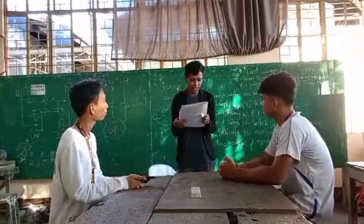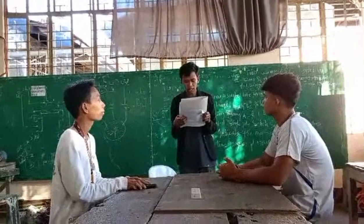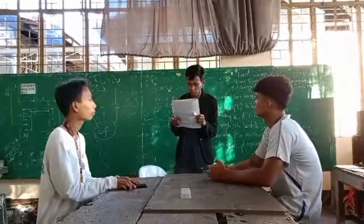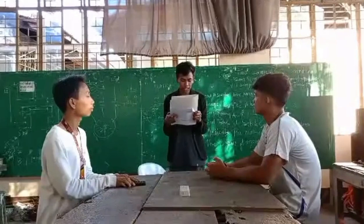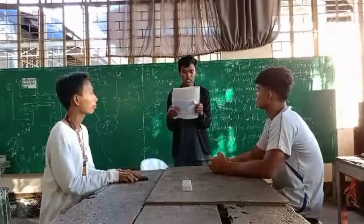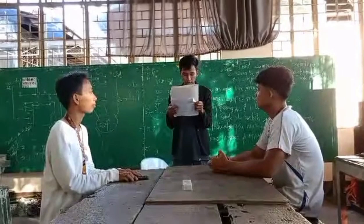Today we are going to administer competency assessment for EIM NC2. The qualification is composed of basic, common, and core competency. We have three core competencies: first, perform rough-in activities, wiring, and related works for single-phase distribution, power lighting, and auxiliary systems; second, install electrical protective devices for distribution, power lighting, auxiliary, and grounding systems; and third, install wiring devices such as floor and wall-mounted outlets, lighting fixtures, switches, and auxiliary outlets.